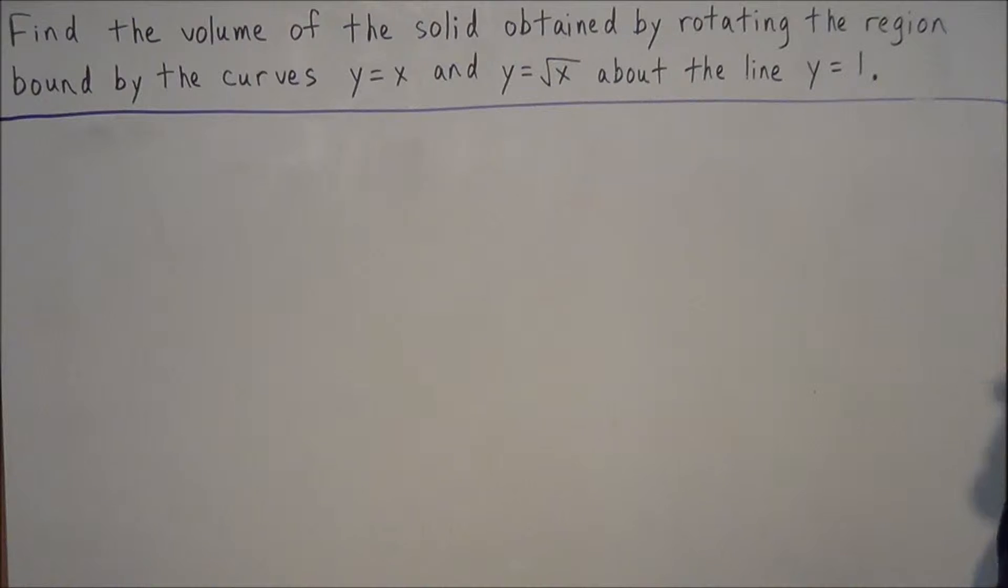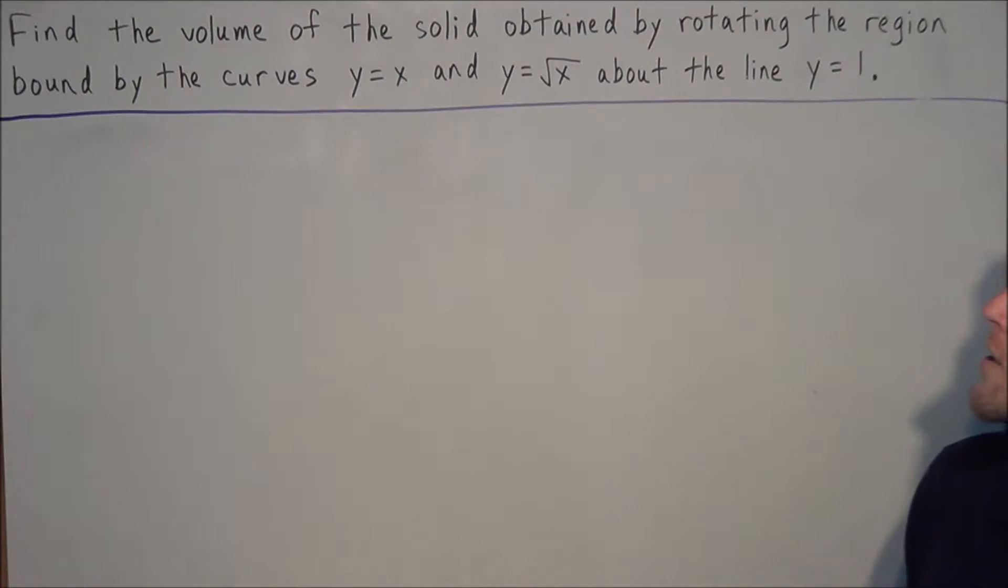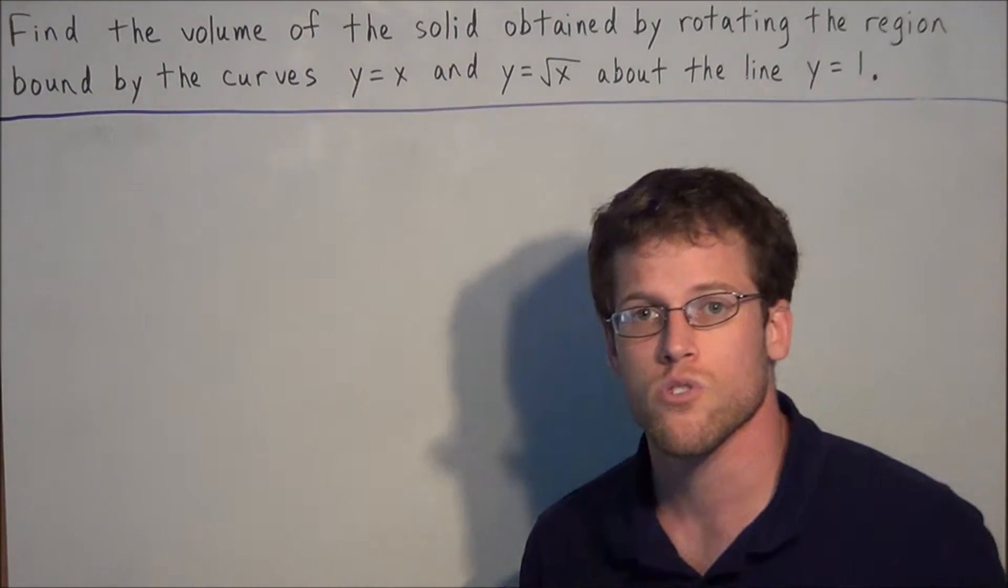We have: find the volume of the solid obtained by rotating the region bound by the curves y equals x and y equals square root x about the line y equals 1.